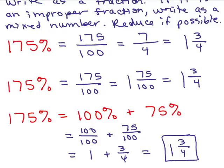All right, so how about you try one now? Take 320 percent and change that to a fraction so that it's a reduced mixed number. You could use any of the methods.